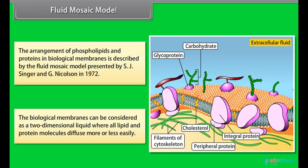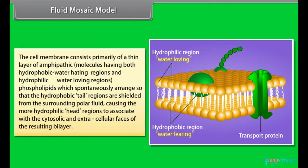The cell membrane consists primarily of thin layer of amphipathic molecules having both hydrophobic water-hating regions and hydrophilic water-loving regions. Phospholipids spontaneously arrange so that the hydrophobic tail regions are shielded from the surrounding polar fluid, causing the more hydrophilic head regions to associate with the cytosolic and extracellular phases of the resulting bilayer.